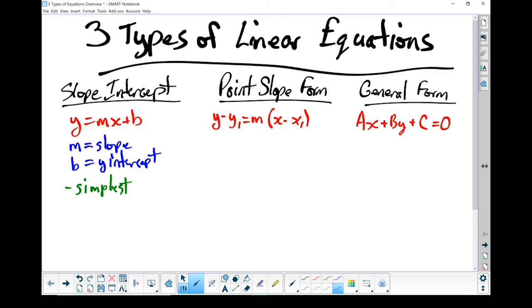Next, we moved on to point-slope form, and this has two parts as well. We've got an m, which is still our slope. We've also got a point, and that is x1 and y1.